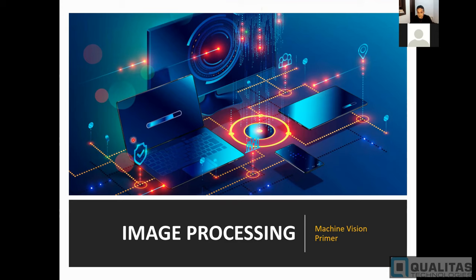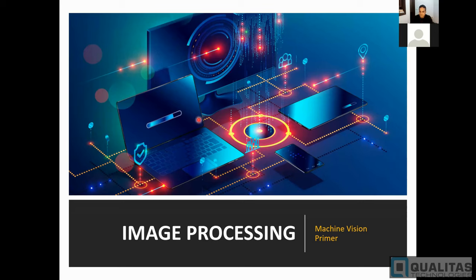Q&A: Can machine vision detect sheet metal panel dents or defects on car panels? Yes, definitely possible. But think about material handling — with complex car bodies, you need to figure out how to acquire images to cover the entire car body. All three parts of the machine vision system must be considered together to solve the application.